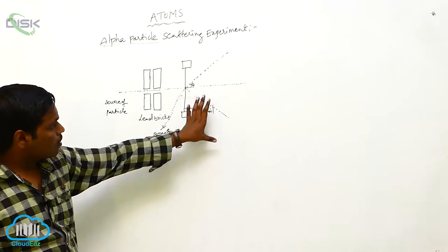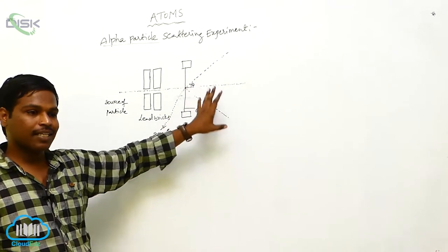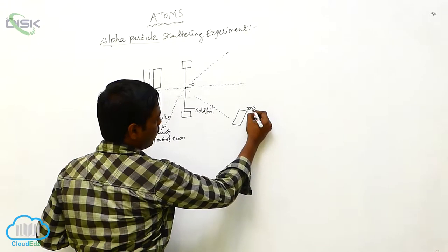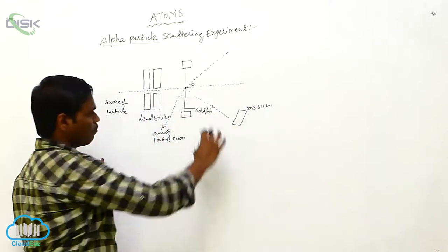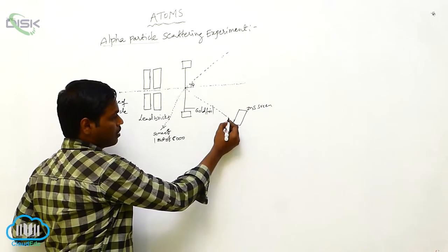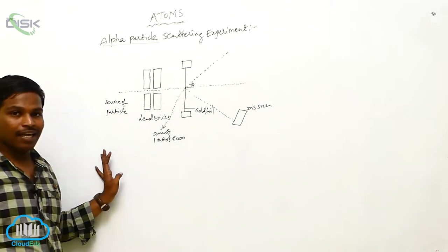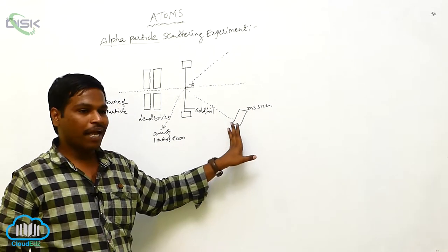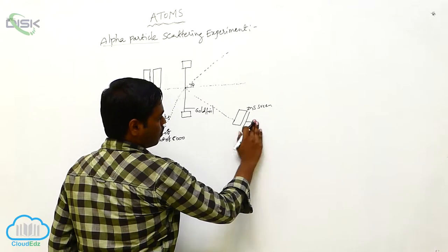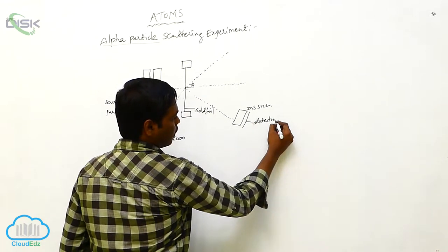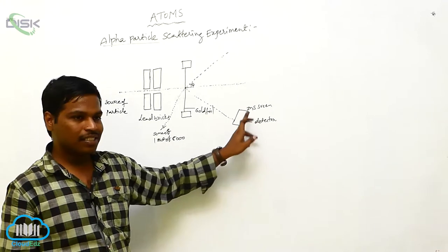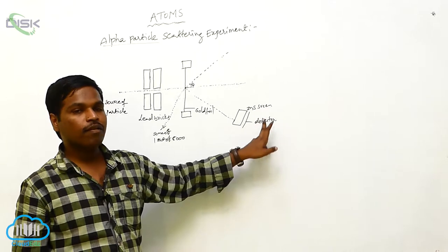These scattering particles can be identified by the zinc sulfide screen. When these scattered alpha particles are incident on this zinc sulfide screen, scintillations occur — bright flashes appear. Here we are taking a microscope as a detector, and this detector can identify the number of scattered particles as a function of scattering angle.